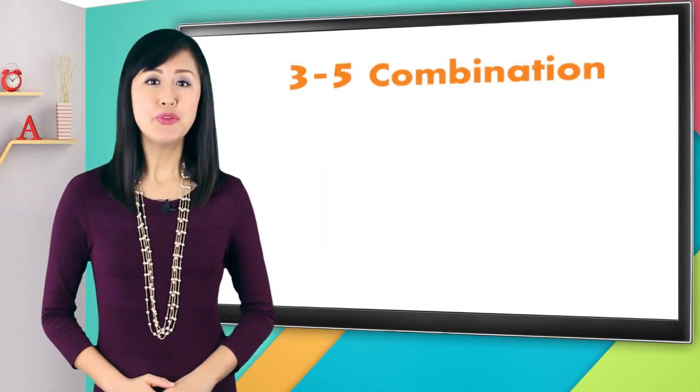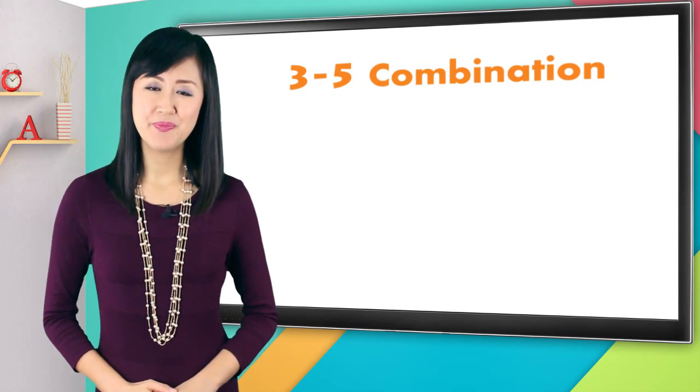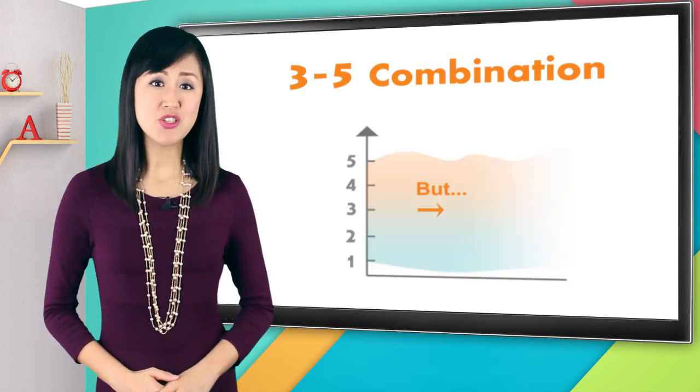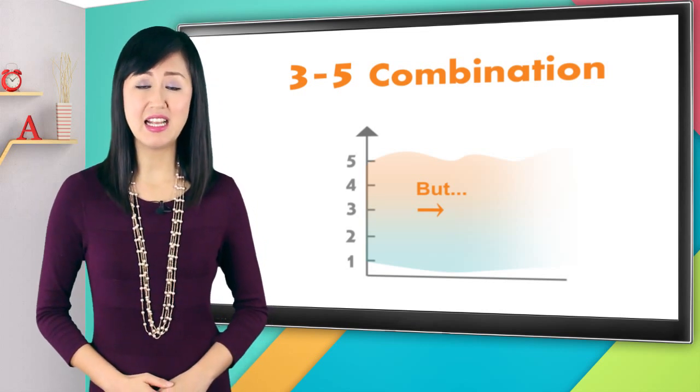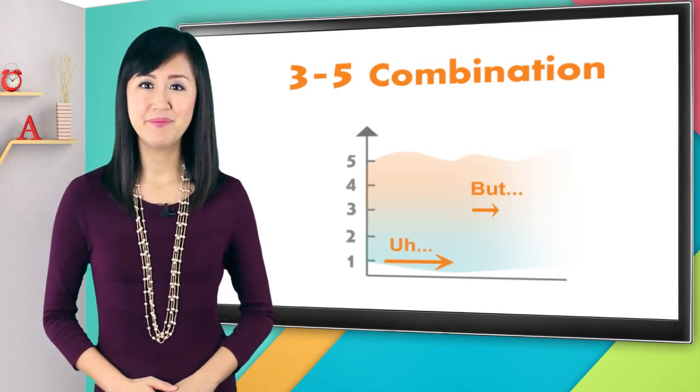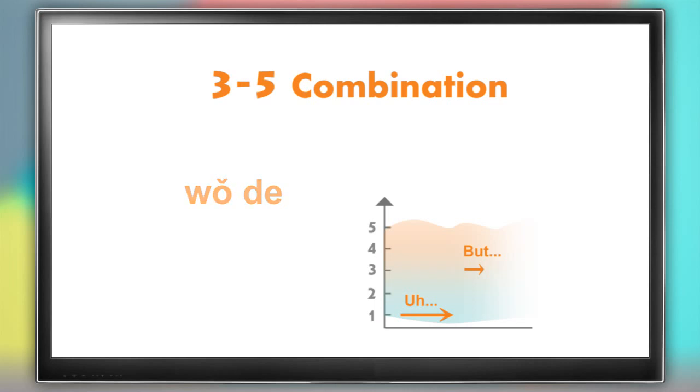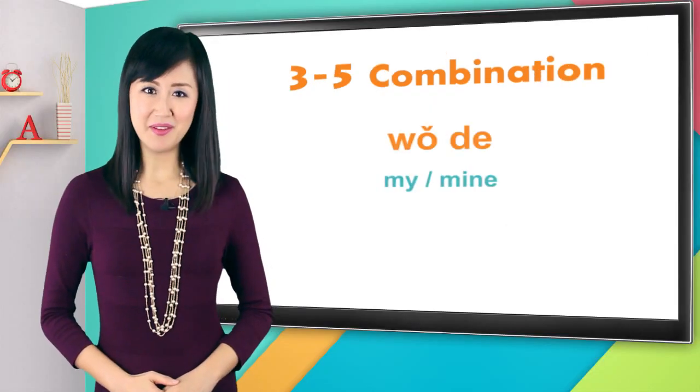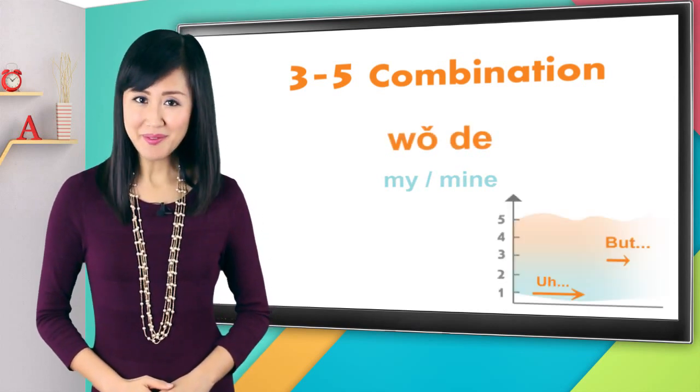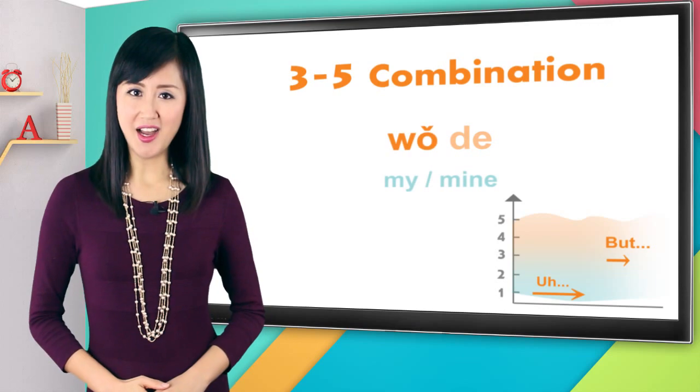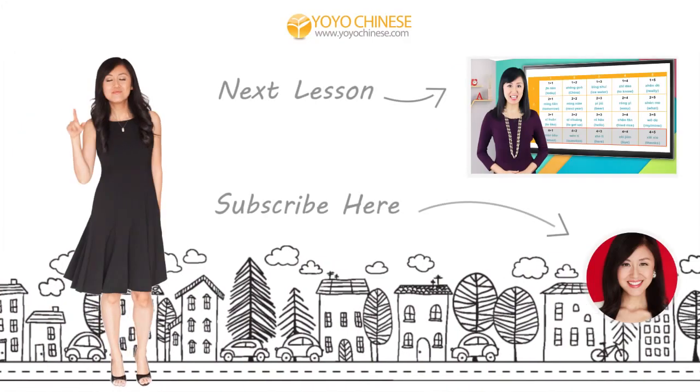Next is three five, third tone and then neutral tone. Remember the neutral tone is short and sweet and in the middle of your voice range. It's like a bǎ. The simple Chinese word for this combo is wǒ de, a bǎ, wǒ de. That means my or mine. Let's say it together. Wǒ de, wǒ de, a bǎ, wǒ de. Great job.